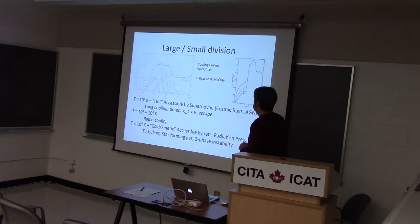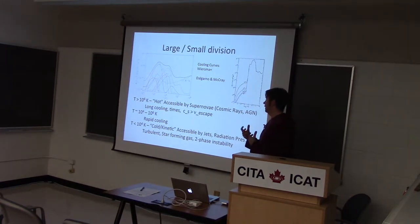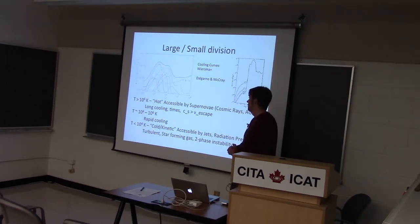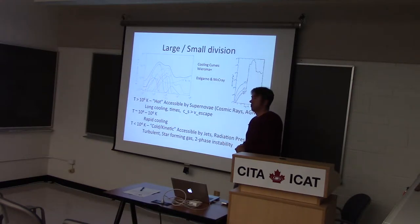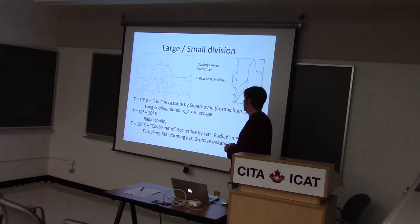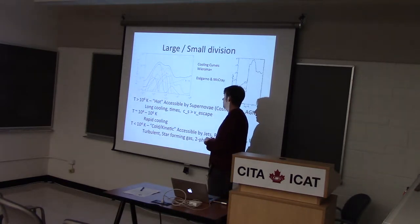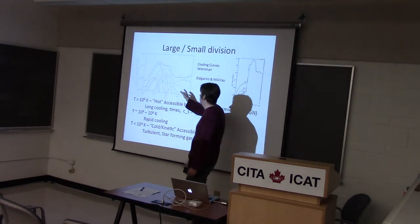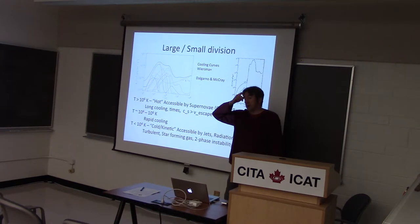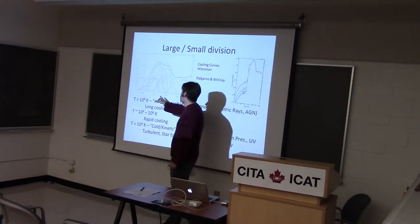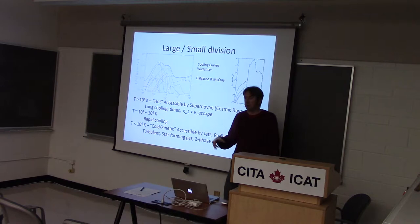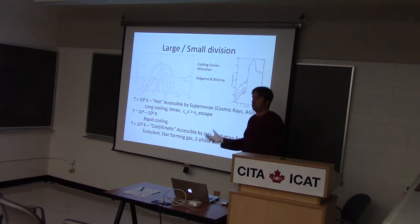Another way of looking at large versus small scale feedback: interesting speeds in a galaxy are of order 100 km/s — you can kick things out of a dwarf galaxy with that. If you convert that to a temperature, you're talking a million kelvin or so. If you're above a million kelvin, you get into the part of the cooling curve where cooling times become long, so that feedback can be effective because that energy can hang around. Whereas between about 10^5 and 10^6 K, the cooling is incredibly strong — any energy you dump there, if it's thermalized, will disappear very quickly. This creates a buffer between small and large scale feedbacks.